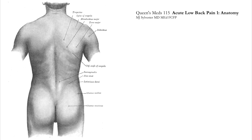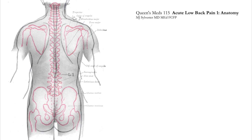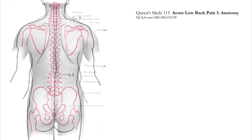Low back pain is usually defined as happening somewhere between the bottom of the ribcage and the gluteal folds, but you'll find it more practical to use the following landmarks.